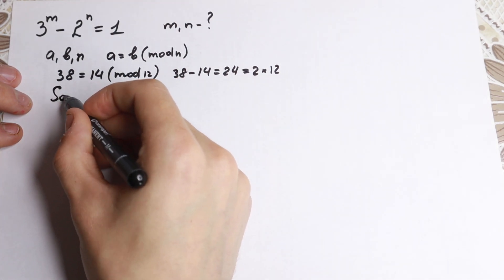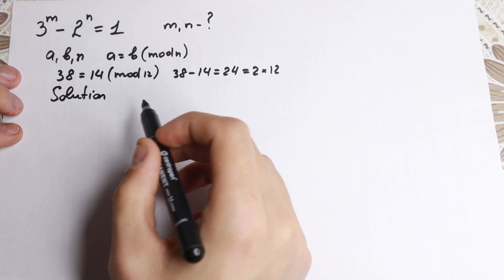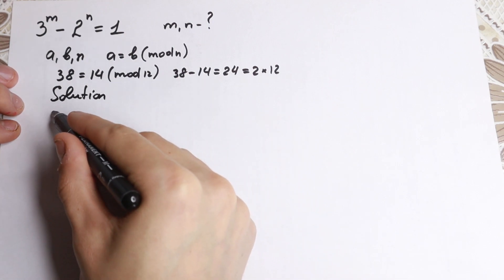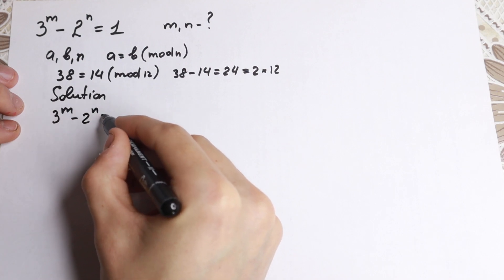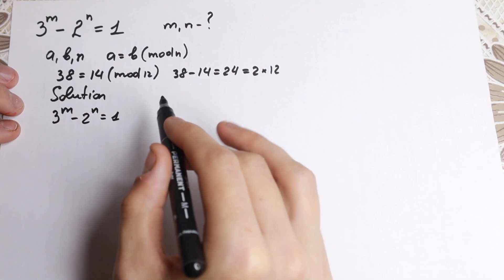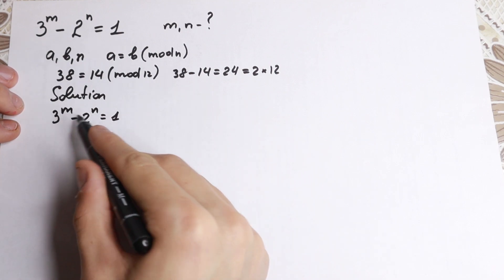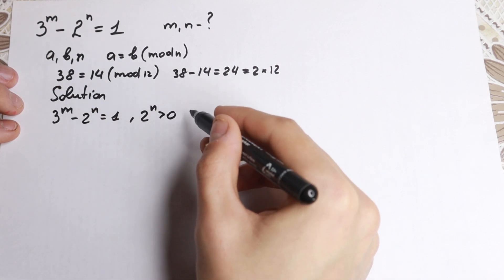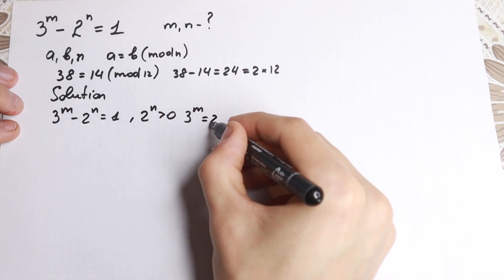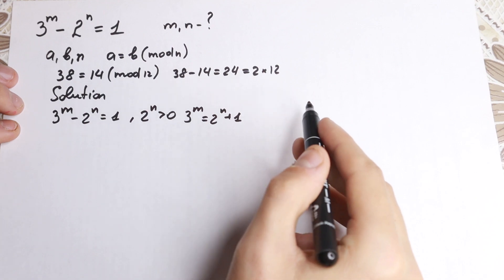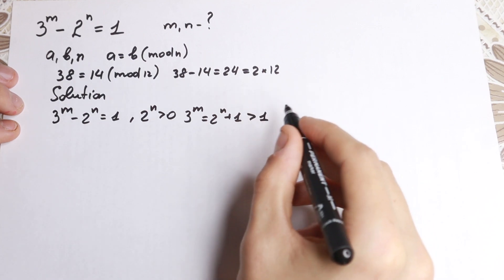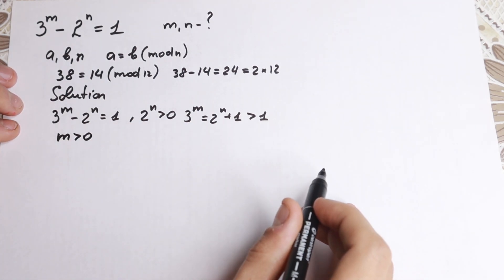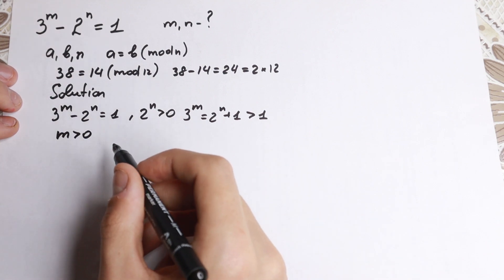So let's find a solution to our problem. For this question we can solve it by finding all solutions and proving there are no others. We have 3 to the power m minus 2 to the n equal to 1. First we observe that m and n are positive integers because we have a positive value on the right hand side. Since 2 to the n is greater than 0, then 3 to the m equals 2 to the n plus 1, which is greater than 1. So m is greater than 0. This is the first step — we need to mention that m is greater than 0.